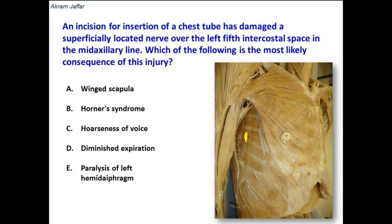Which nerve will be affected, and what will happen if this nerve is affected? The nerve that is likely to be affected is the long thoracic nerve — the nerve to serratus anterior. You can see serratus anterior here; these are the digitations of serratus anterior muscle. The serratus anterior is supplied by the long thoracic nerve, which is a branch of the roots of the brachial plexus from C5, 6, and 7, and it descends down to supply the serratus anterior muscle.